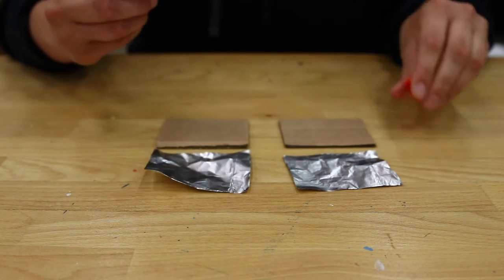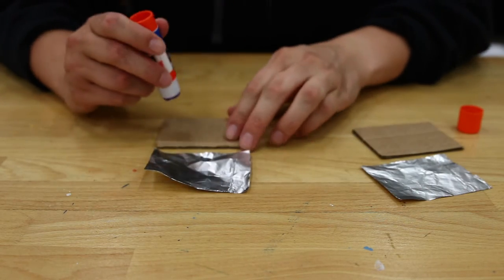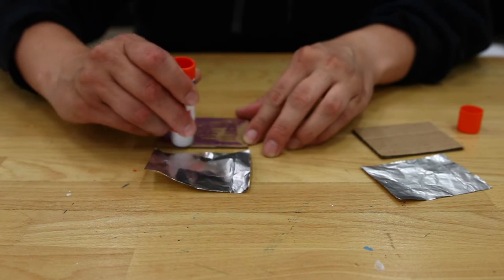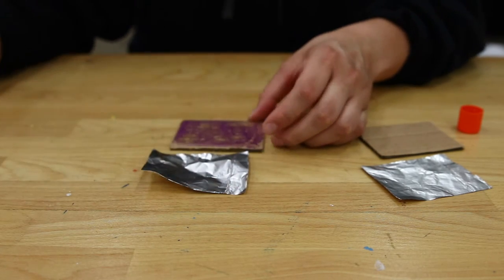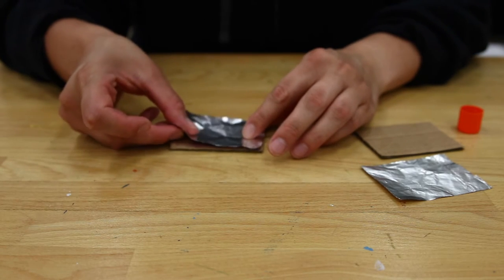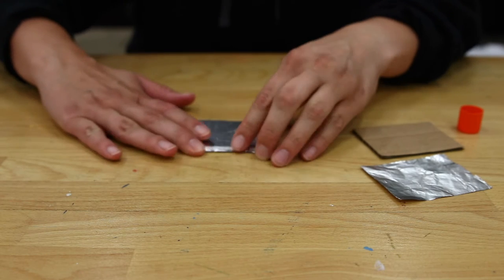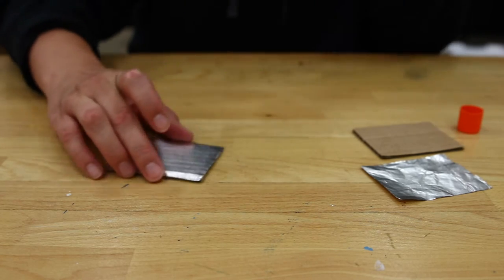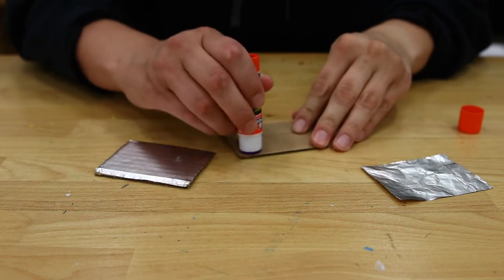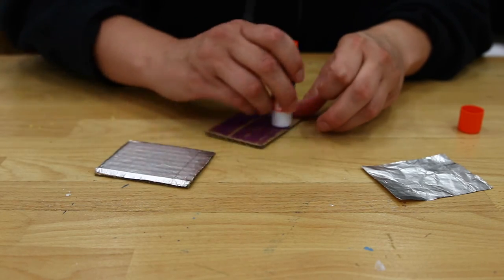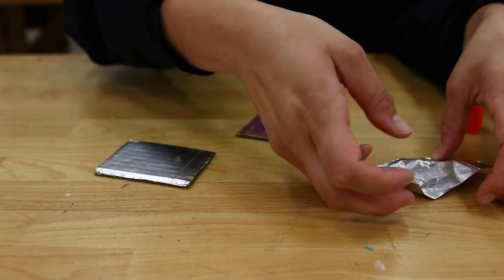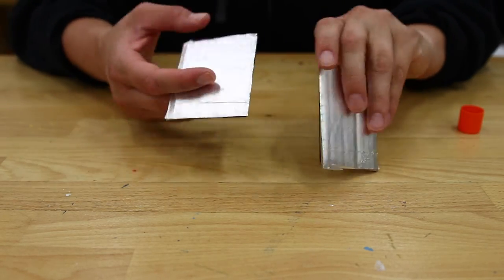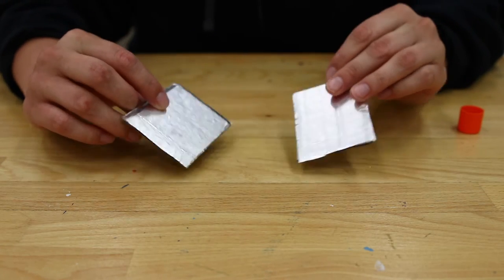Grab your glue stick and start covering one side of the cardboard with a healthy amount of glue. Once the cardboard surface is sticky, carefully place one piece of foil on top and rub the surface so that the foil sticks. Repeat this process for your second piece of cardboard and foil. There are two parts of your switch. Note that only one side of each piece is covered with conductive aluminum foil.